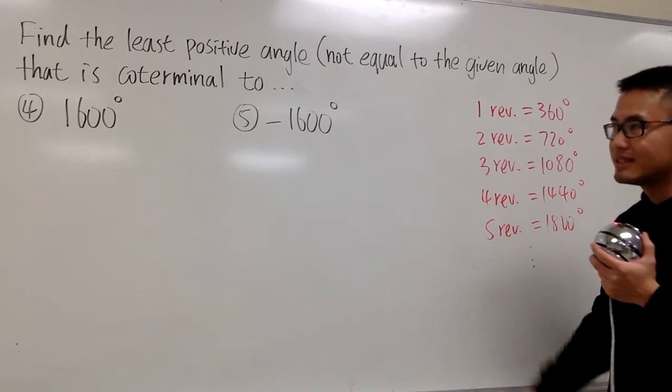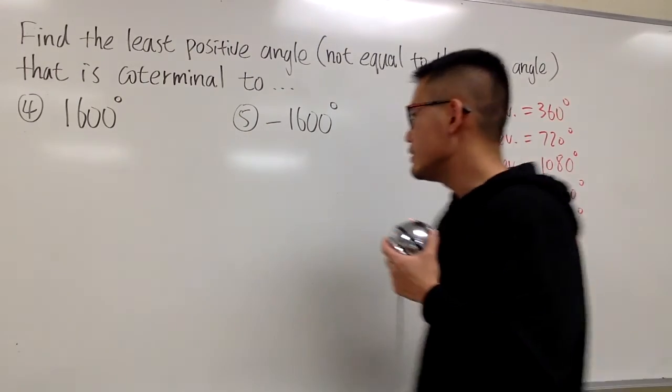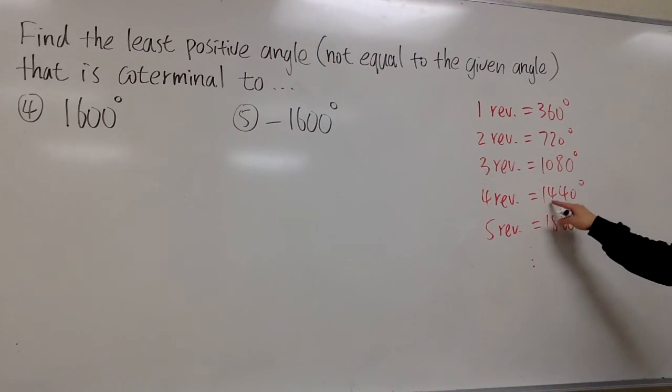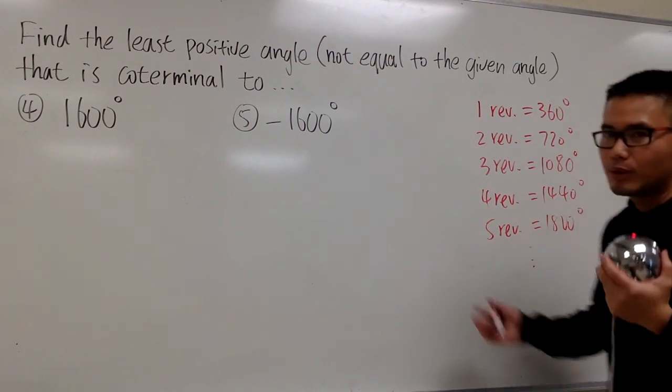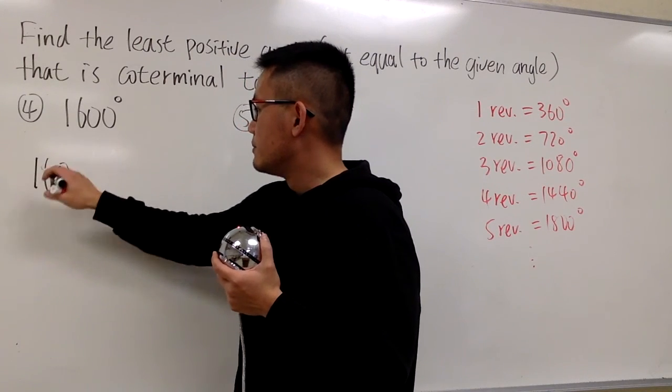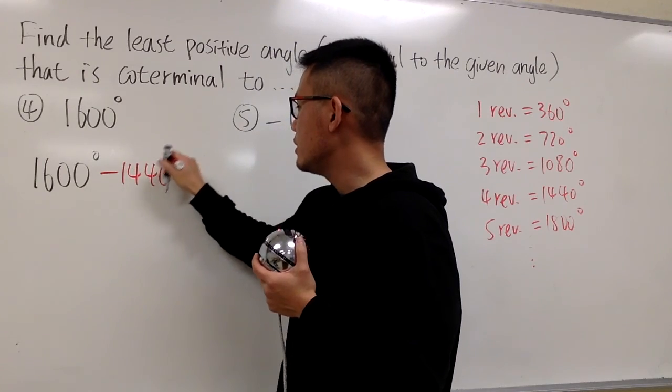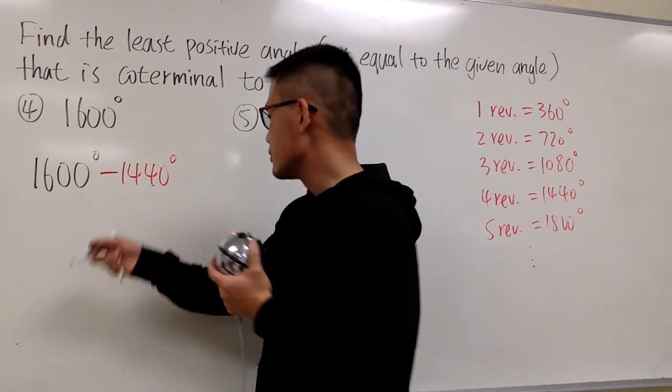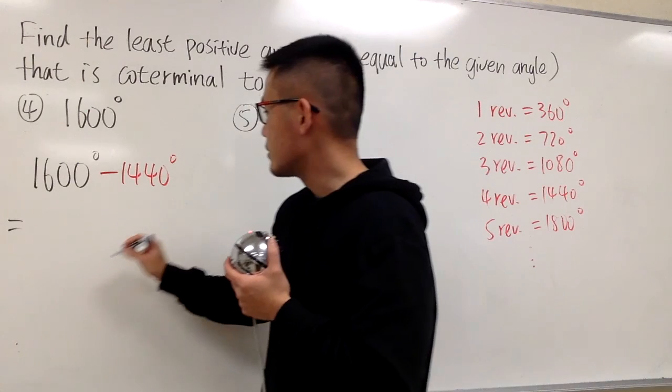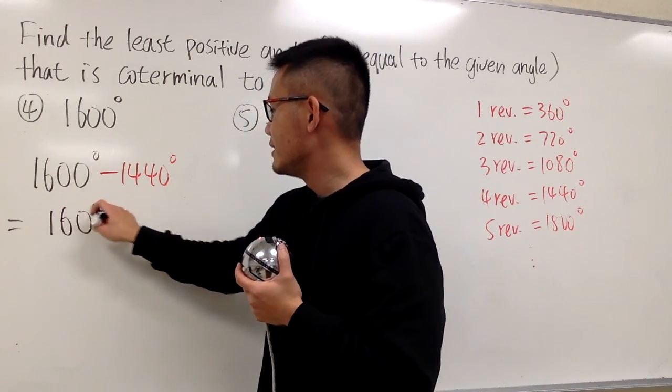So what I have to do is take this, 1600 degrees, and then I will subtract 1440 degrees. And that will be the answer. Let me show you. Right here, I'll write down 1600 degrees, and I will just subtract 1440 degrees. And just once again do the math, this right here is going to give you 160 degrees.